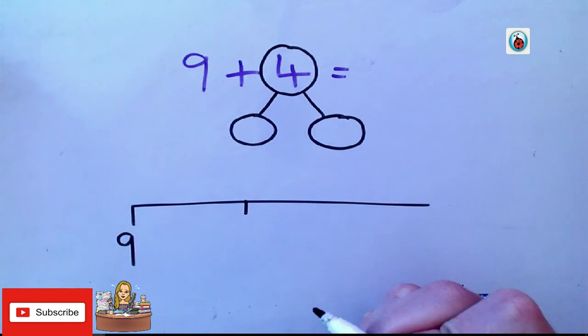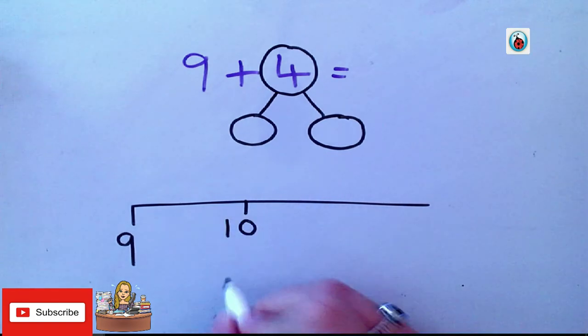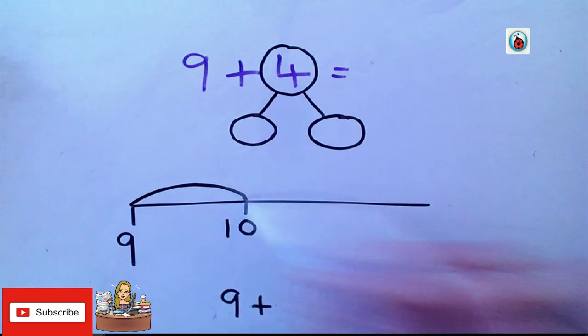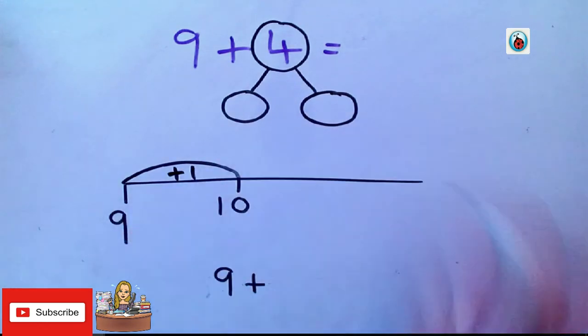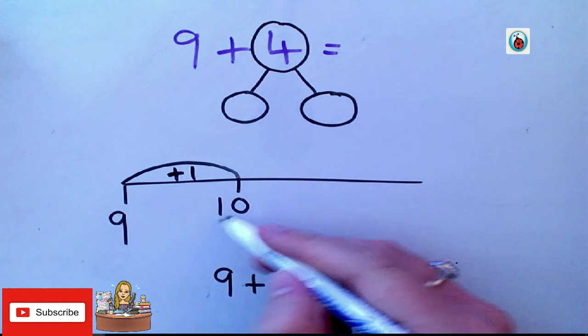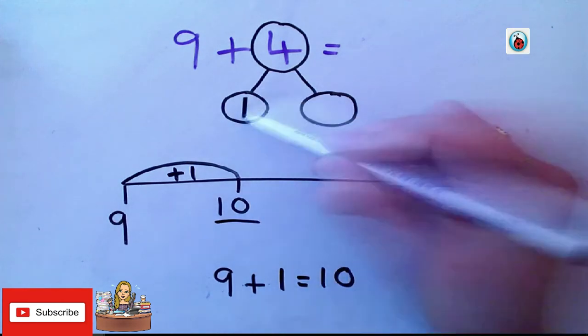And what do I need to get to? That's right, I need to get to 10. So, so far, I've done 9 add something equals 10. So, what is that something? 9 add 1. That's right. 9 add 1. So, I'm going to write 9 add 1 equals 10. I've made 10. So, my first number is going to be 1.